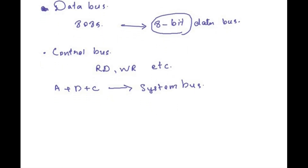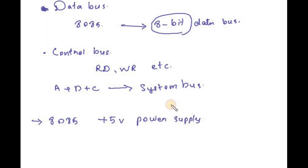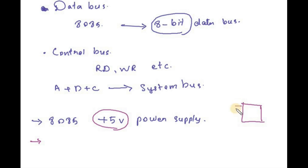The 8085 microprocessor works on a plus 5 volt power supply. This is an important feature. The microprocessor has 40 external pins in its pin diagram, which define how it connects to external components.